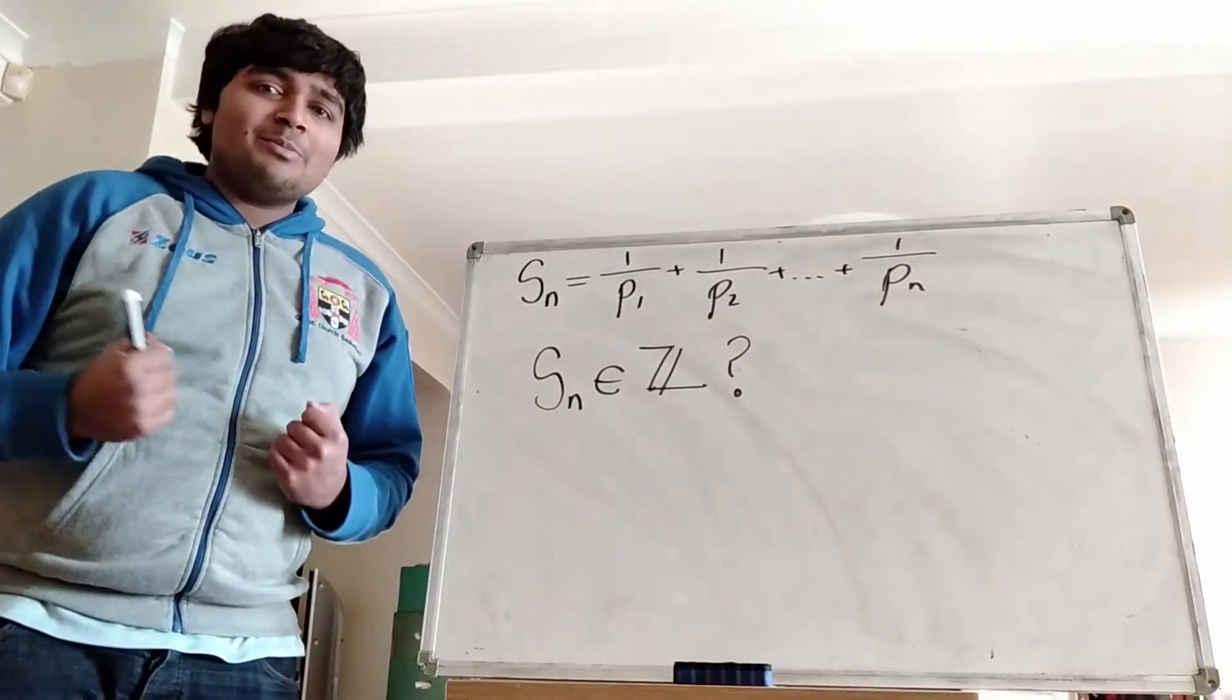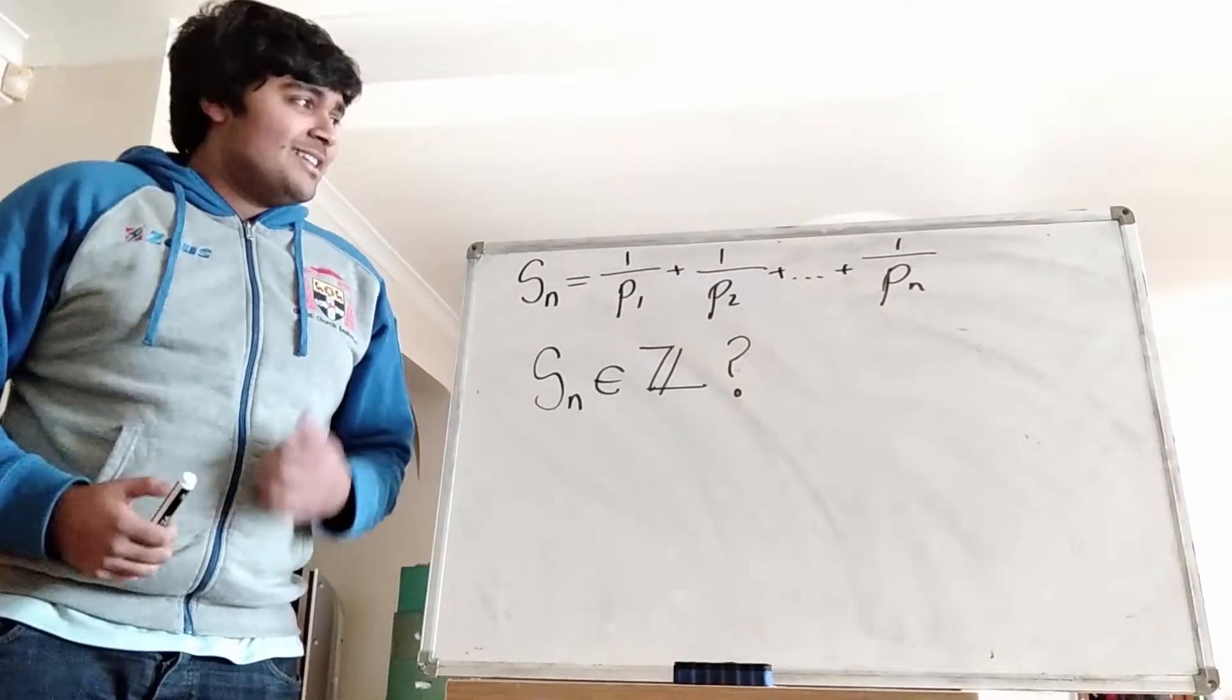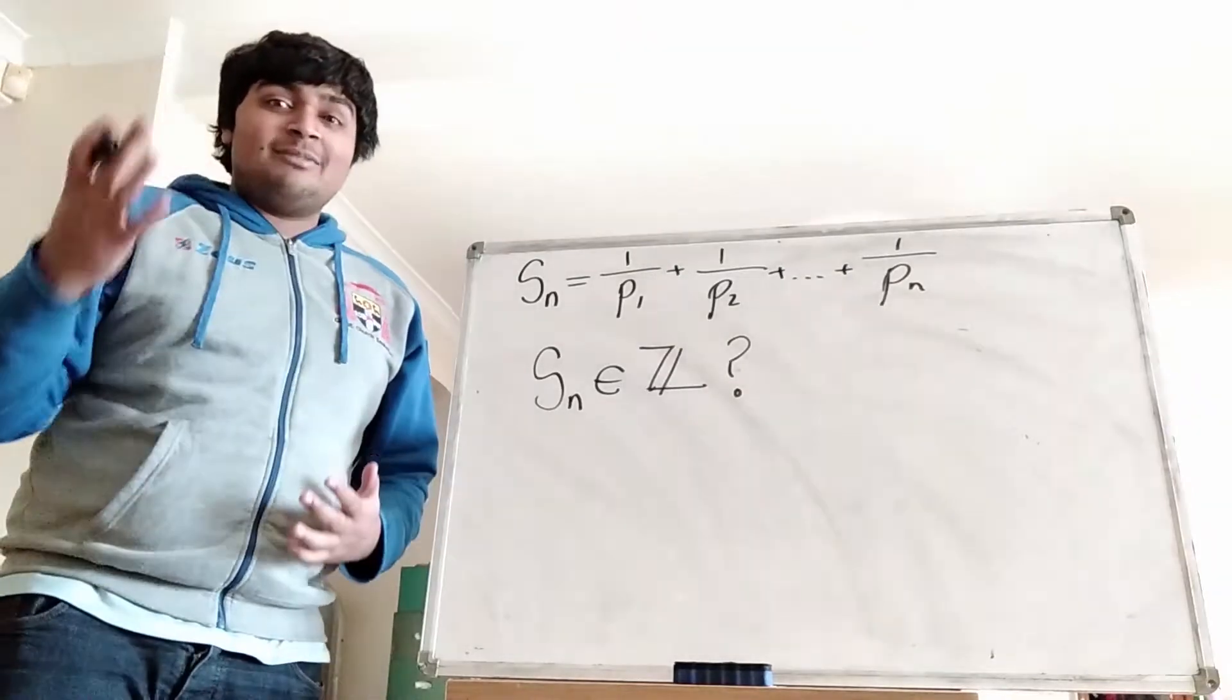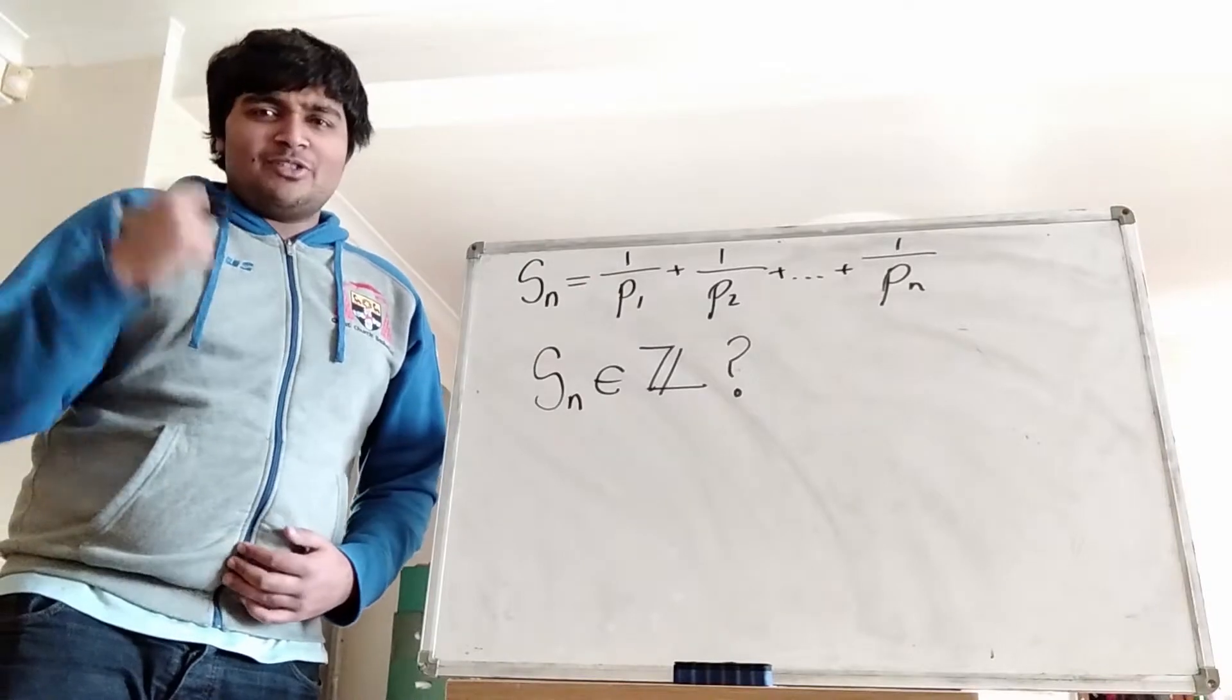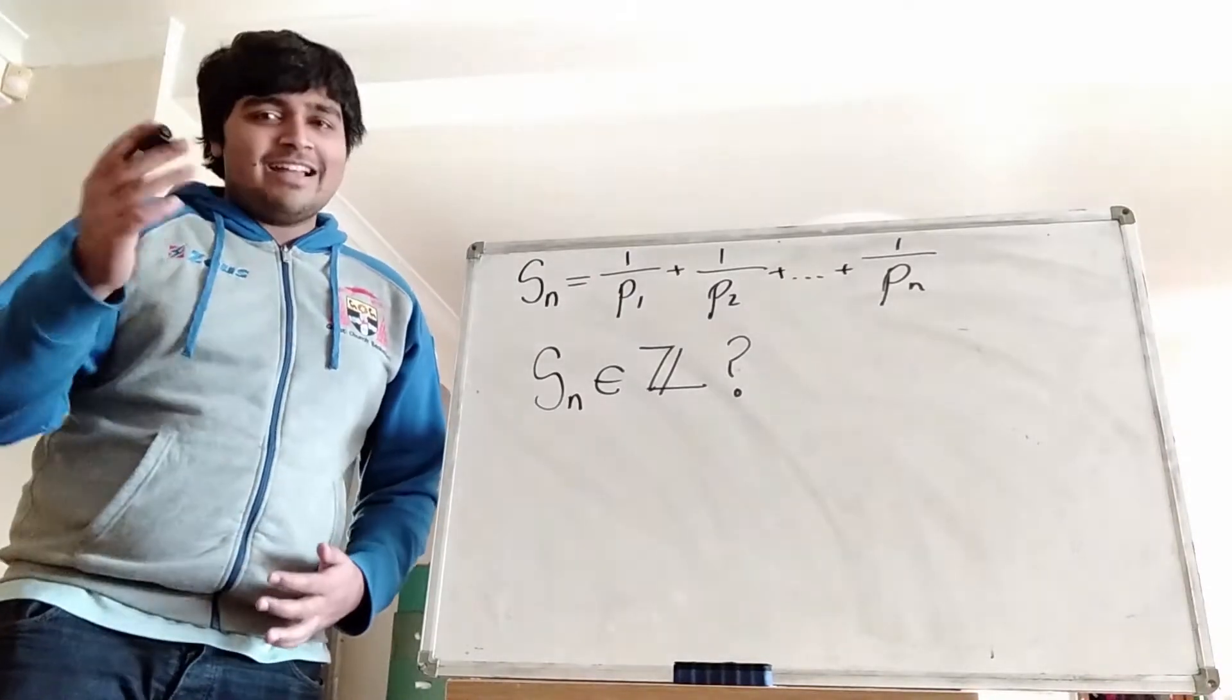Hi, thanks for joining me. Today I've got a fun problem involving the reciprocals of primes. Now, I've already made a video in which I look at the sum from 1 to infinity of the reciprocals of the primes, so 1 over 2 plus 1 over 3 plus 1 over 5, and so on.